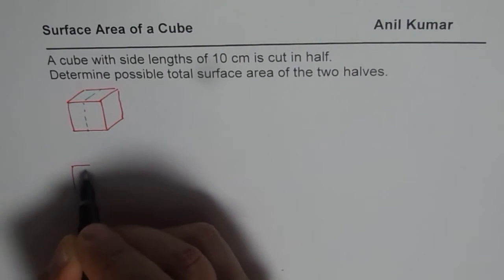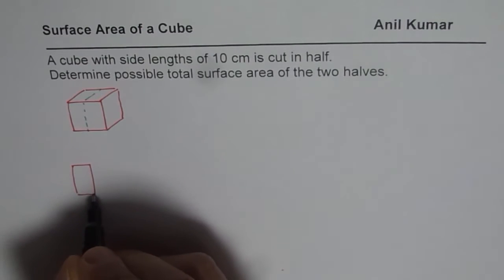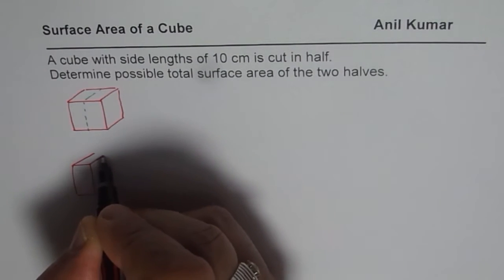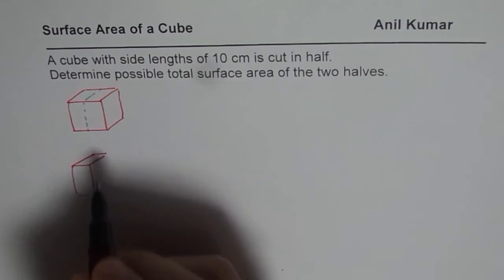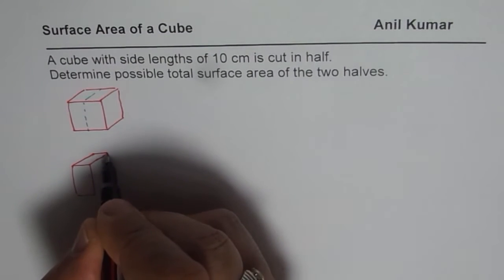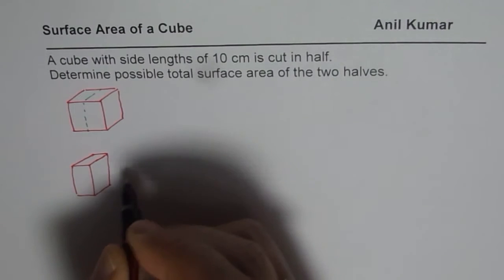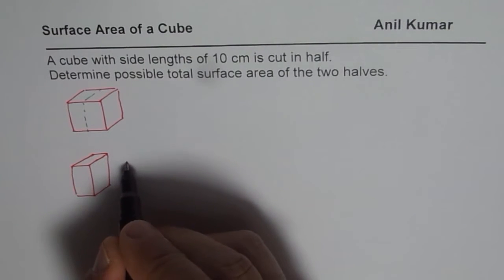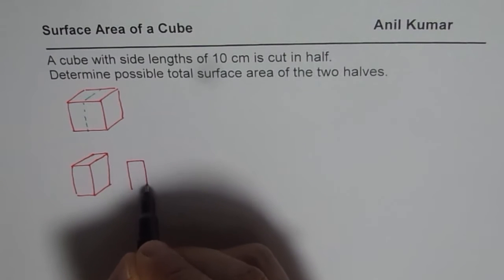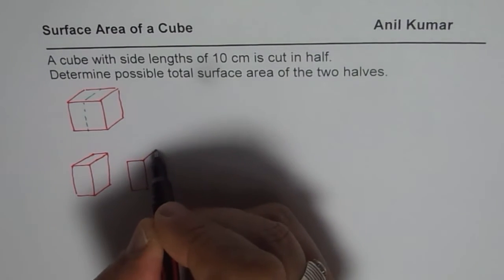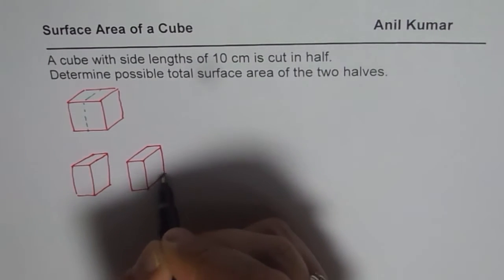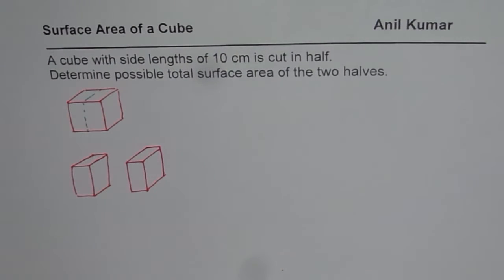So one is kind of like this. And another also exactly similar. So let me just draw it on the side. So we have two rectangular prisms here. So we have two different rectangular prisms.